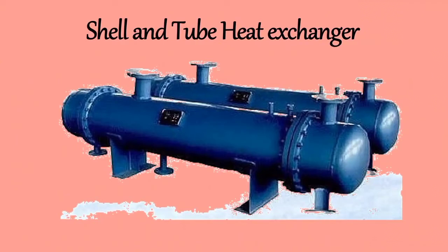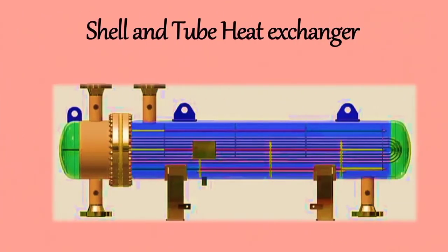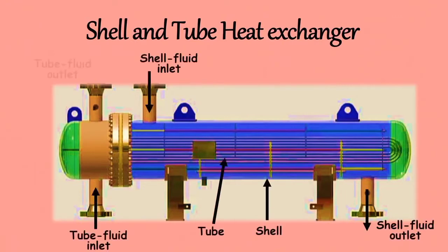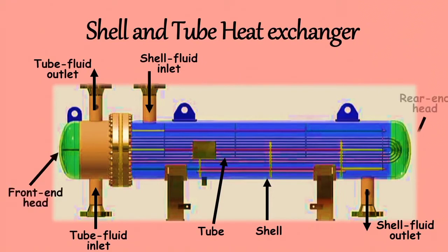Hence shell and tube exchangers can be used when double pipe exchangers do not provide sufficient area for heat transfer. Shell and tube heat exchanger is made up of various components. The major components of this exchanger are: shell, tube, fronted head, rear end head, tube sheet, tie rods, and baffles.